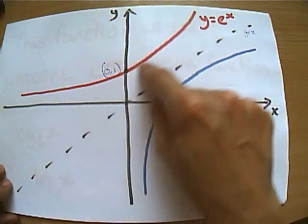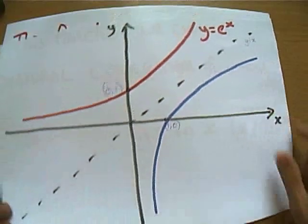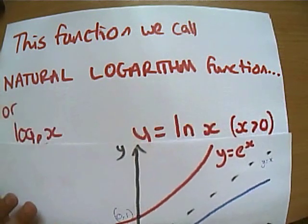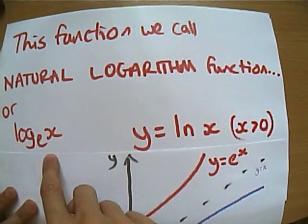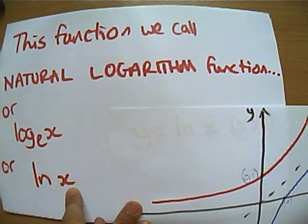So if this is called y equals e^x, the function we've just come up with in blue is called the natural logarithm function, which is a bit of a mouthful. So you could also call it log base e of x, or you can call it ln x, which is what I like to call it.